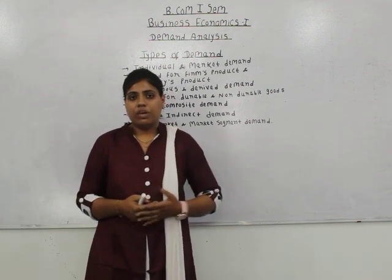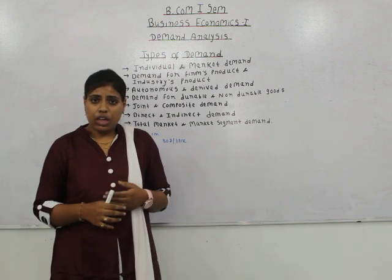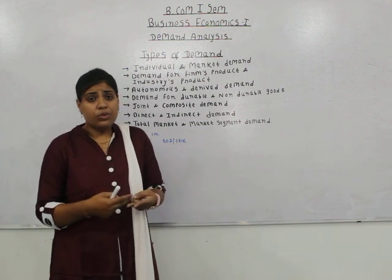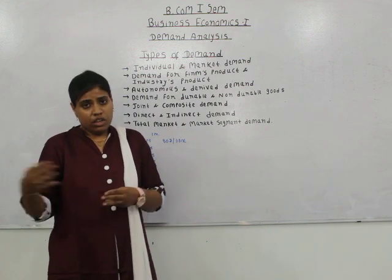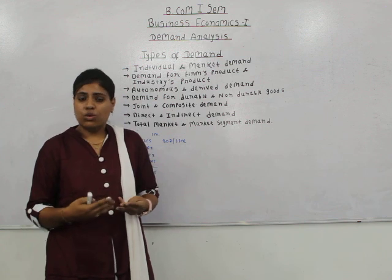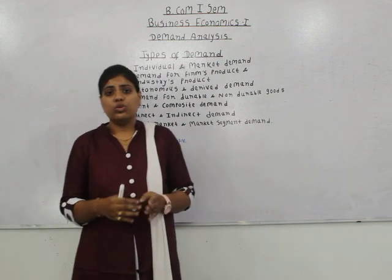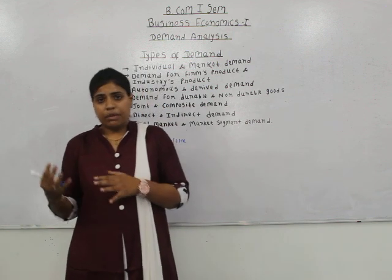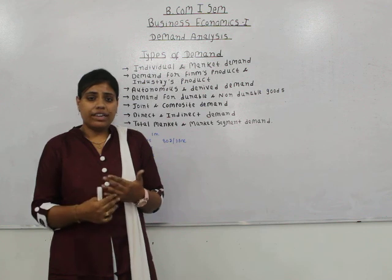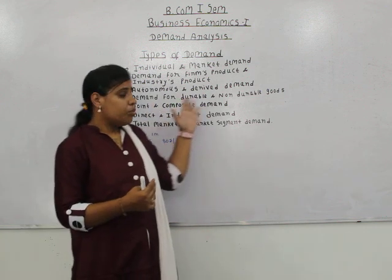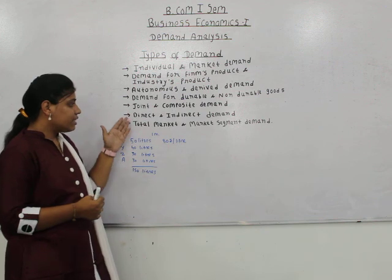For example, electricity can be put to household use, agricultural use, and industrial use. It is a single product which can be used for satisfying multiple wants. When demand for such a product arises, it is known as composite demand.